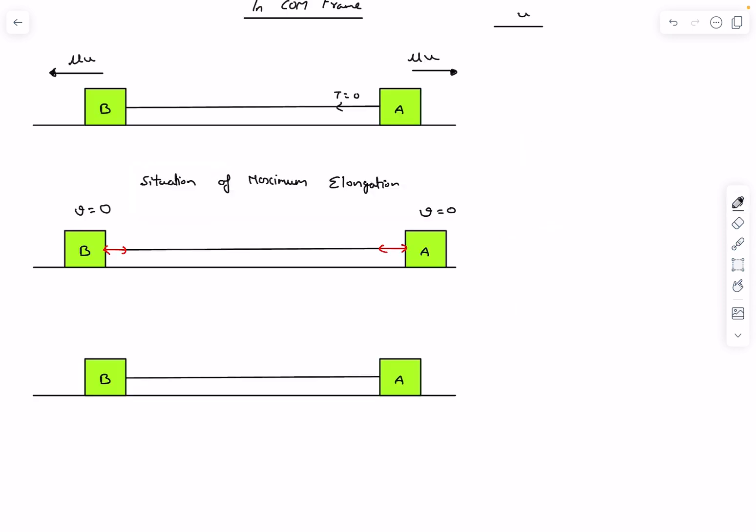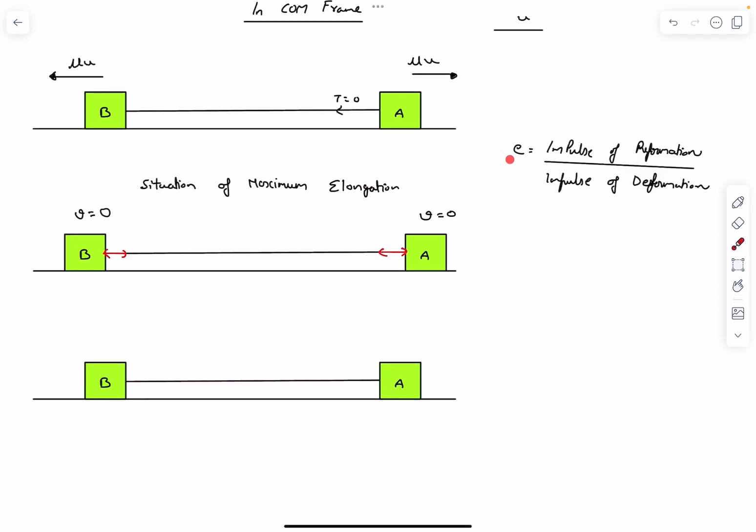Now we are going to use the idea of the coefficient of restitution. The word restitution essentially means restoration. In the context of a given problem, as the string is being elongated, we can consider that as a deformation. In this case, the deformation is basically the stretching of the chord. We can figure out the impulse of deformation by observing these two cases. If you observe, block a, its momentum changed from mu u to zero, and who changed the momentum? It's the tension force of the string.